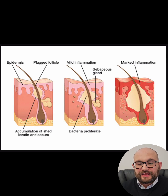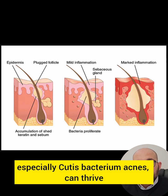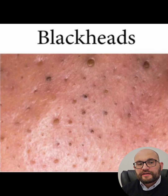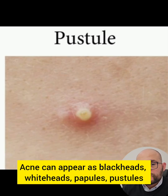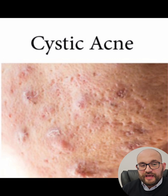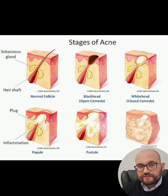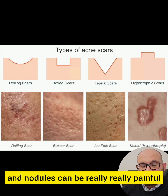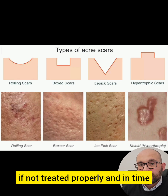Clogged pores create an environment where bacteria — especially Cutibacterium acnes — can thrive, which leads to inflammation and a breakout. Acne can appear as blackheads, whiteheads, papules, pustules, nodules, or cysts, and it's often found on the face, chest, back, or the shoulders. Inflammatory lesions like pustules and nodules can be really painful and may lead to scarring if not treated properly and in time.